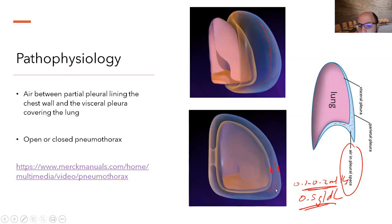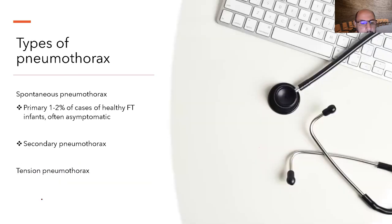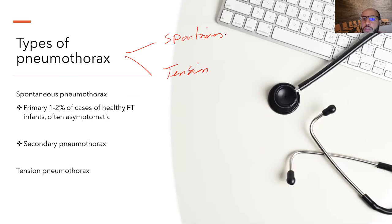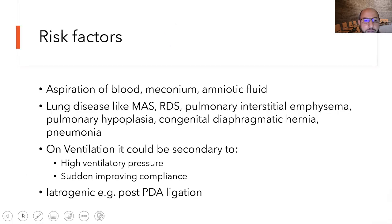Pneumothorax can be open or closed. Spontaneous pneumothorax can be primary — around 1-2% of cases, in otherwise healthy infants who are usually asymptomatic or have mild respiratory distress with no clear underlying cause — or secondary, due to RDS, pneumonia, meconium aspiration syndrome, or other underlying causes. We also have tension pneumothorax, which is a separate and critical category to be aware of.